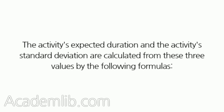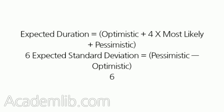The activity's expected duration and the activity's standard deviation are calculated from these three values by the following formulas. Expected duration equals optimistic plus 4 times most likely plus pessimistic, divided by 6. Expected standard deviation equals pessimistic minus optimistic, divided by 6.